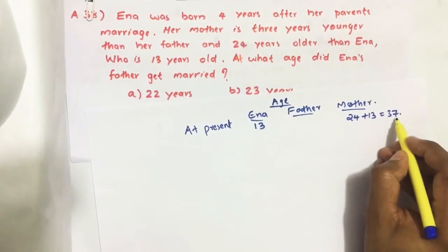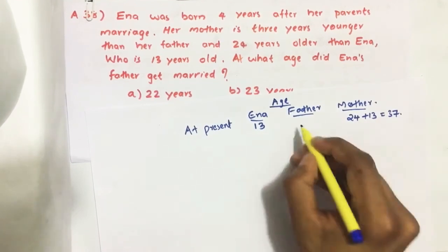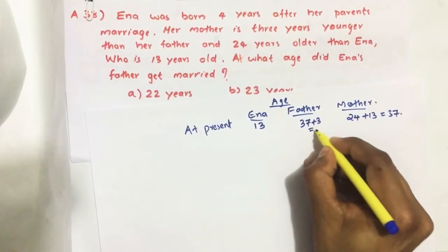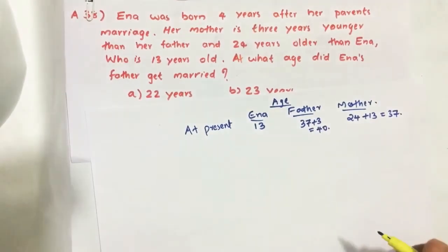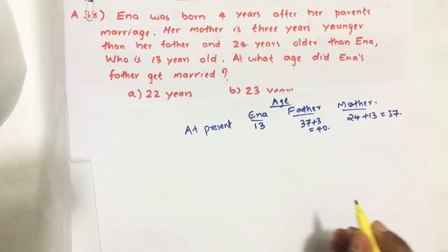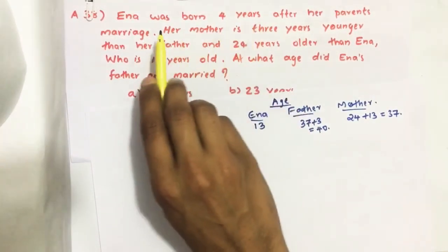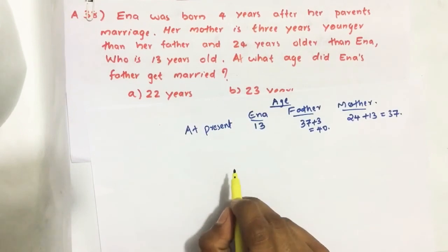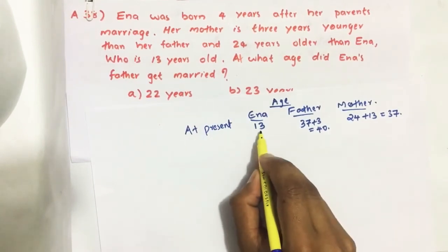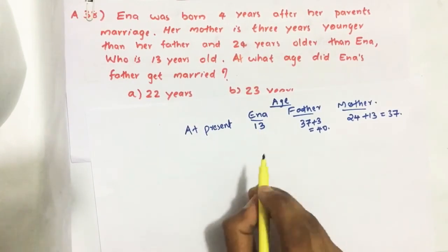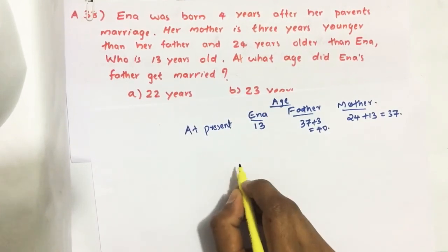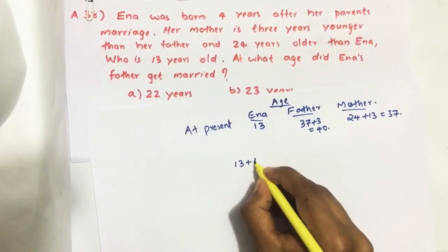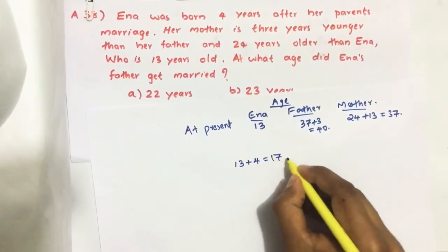Mother is three years younger than father, so father's age is 37 plus 3, we get 40. It is given that Inna was born four years after her parents' marriage. Now Inna is 13, so their marriage was 13 plus 4 — 17 years ago.